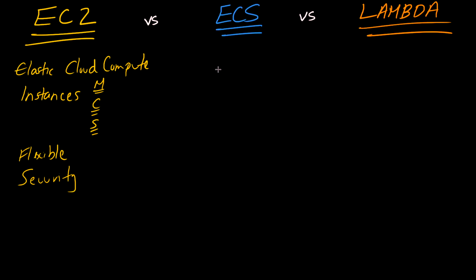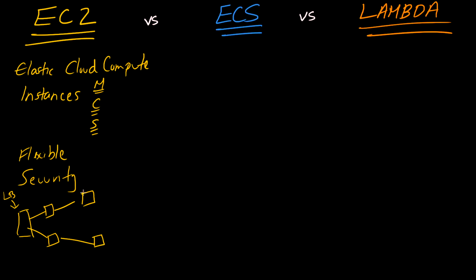Before moving on to ECS and Lambda, let's walk through how you'd host a web application using EC2, so we can compare it to the other options. If you're using a fleet of EC2 machines for a web application, you need a load balancer, target groups, and an auto-scaling group associated with each target group. Within the auto-scaling groups is where your instances are actually located. These ASGs control bringing machines up or down for auto-scaling purposes.